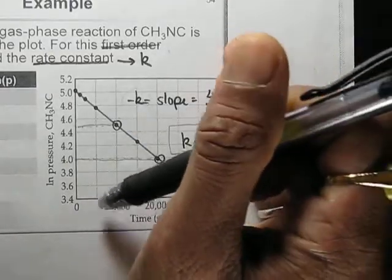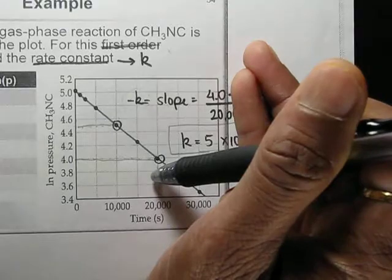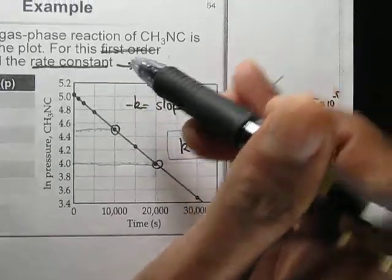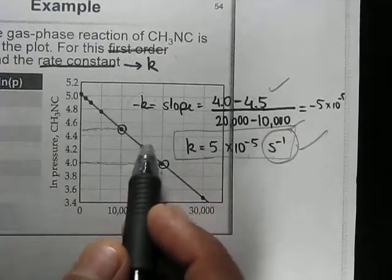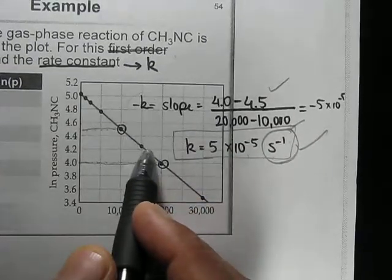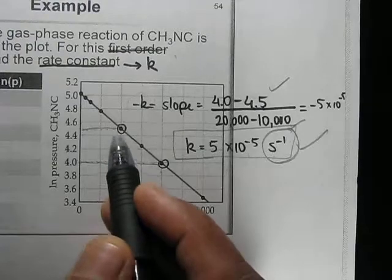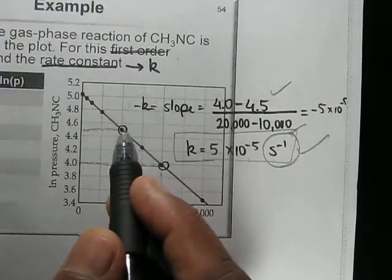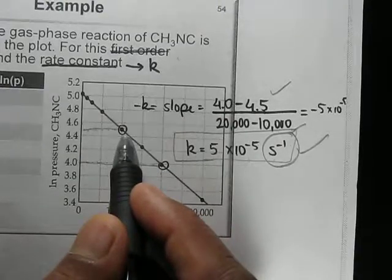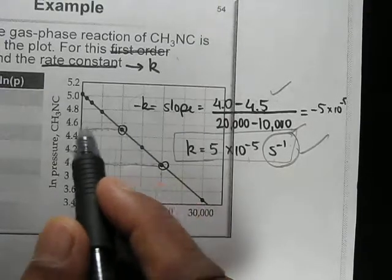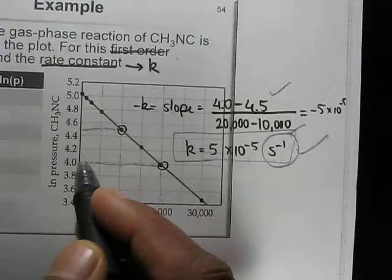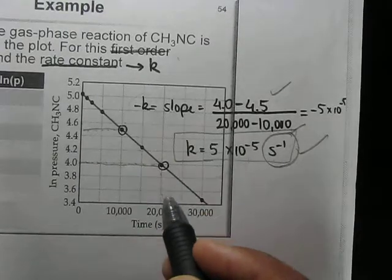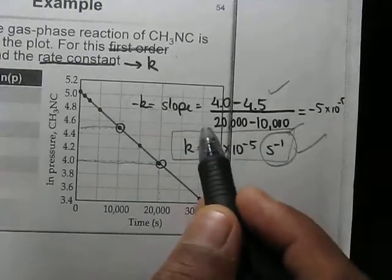Time is increasing from left to right. To calculate k, we calculate the slope of this graph. We can choose any two points — in this graph two specific points have been chosen — then find the y-axis values, subtract them, and divide by the change in time between those two points.